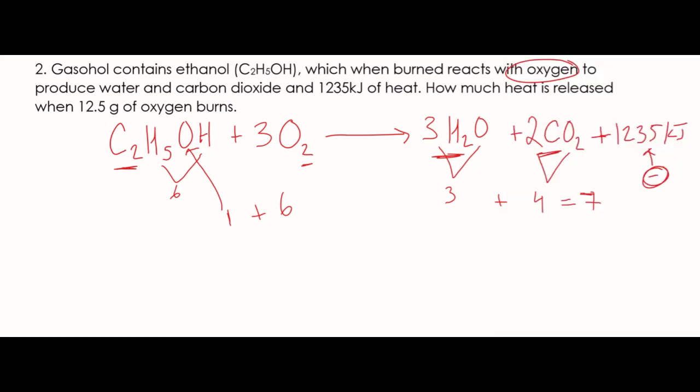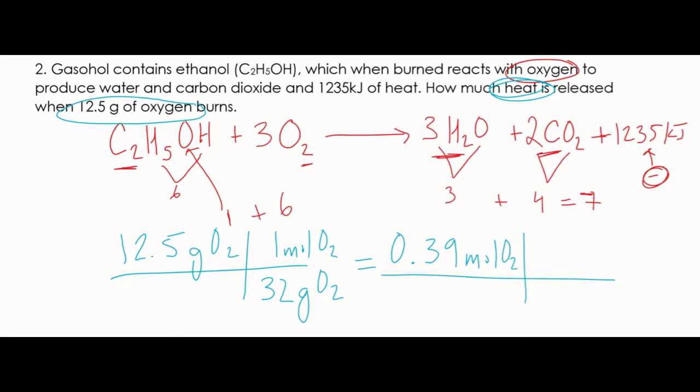So it wants 12.5 grams of oxygen, and it wants to know how much heat is released by that. So 12.5 grams of O2. That diagonal matches mole on top. And it's going to be 32 from the periodic table. So you just grab your calculator and divide 12.5 divided by 32. That'll give you 0.39, and that's going to be moles of O2. And once you have moles of oxygen, then you can get the kilojoules using the equation. So diagonal matches, kilojoules on top. It's negative, so it's a product. And then 3 from the equation. So we're going to take 0.39 times negative 1235 divided by 3. And that'll give us negative 161 kilojoules.